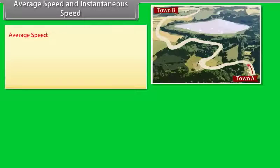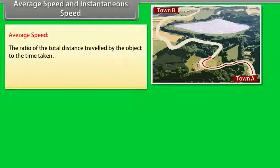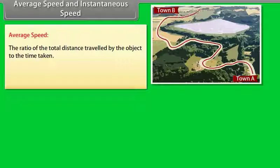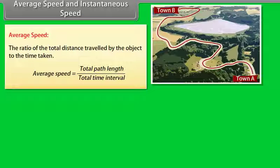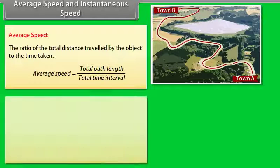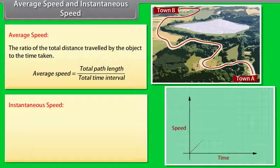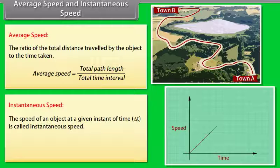Average speed and instantaneous speed. Average speed: the ratio of total distance traveled by the object to the total time taken. Average speed equals total path length divided by total time interval. Instantaneous speed: the speed of an object at a given instant of time is called instantaneous speed.